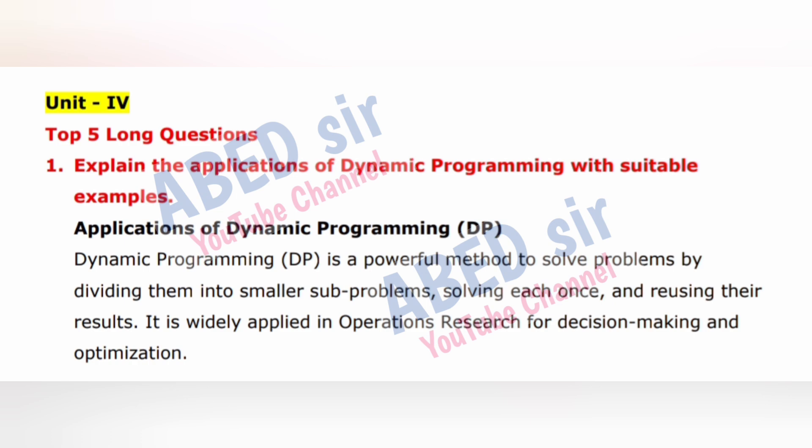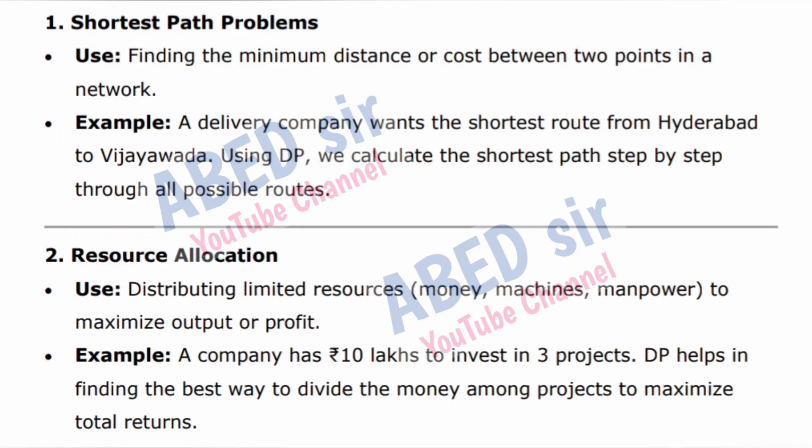Applications of Dynamic Programming (DP). Dynamic programming is a powerful method to solve problems by dividing them into smaller subproblems, solving each once, and reusing their results. It is widely applied in operations research for decision making and optimization. 1. Shortest path problems — finding the minimum distance or cost between two points in a network. Example: A delivery company wants the shortest route from Hyderabad to Vijayawada. Using DP, we calculate the shortest path step by step through all possible routes.